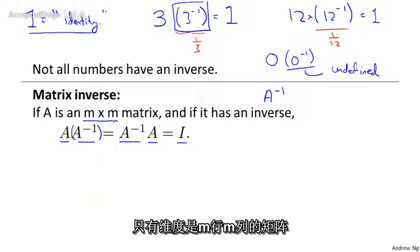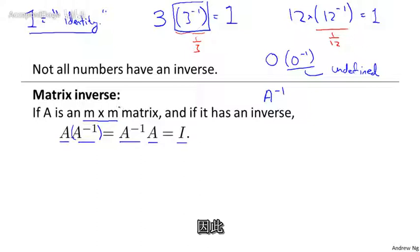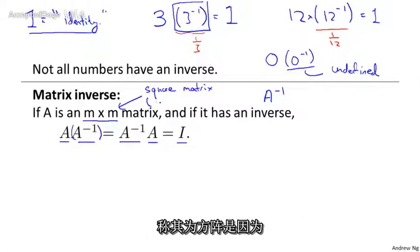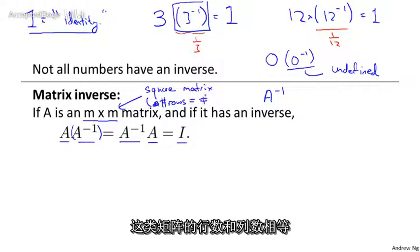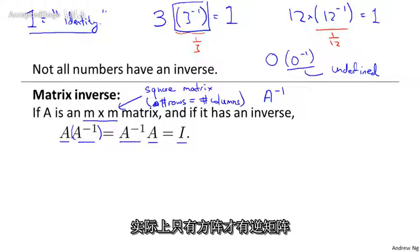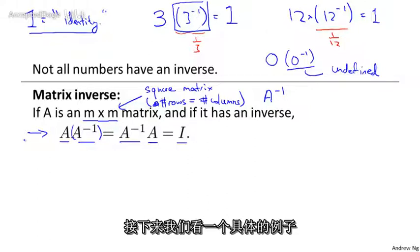Only matrices that are M by M for some value of M have an inverse. This is also called a square matrix, and it's called square because the number of rows is equal to the number of columns. And it turns out only square matrices have inverses. So if A is a square matrix, and if it has an inverse, then it satisfies this equation over here. Let's look at a concrete example.